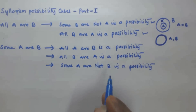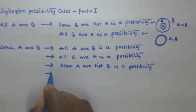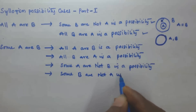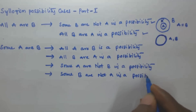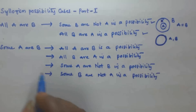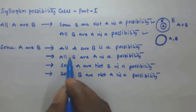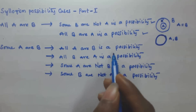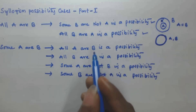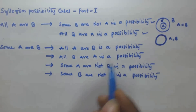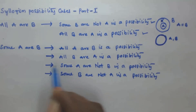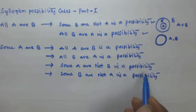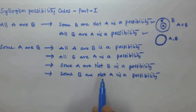Fourth, if 'Some A are not B', then 'Some B are not A' is also a possibility. So from 'Some A are B', we get four possibilities: all A are B, all B are A, some A are not B, and some B are not A.